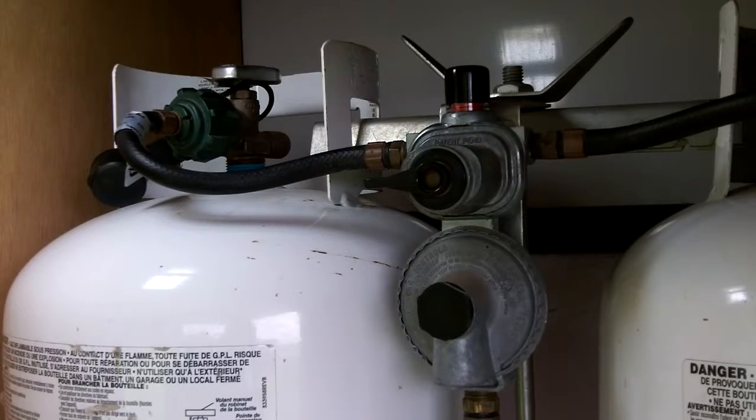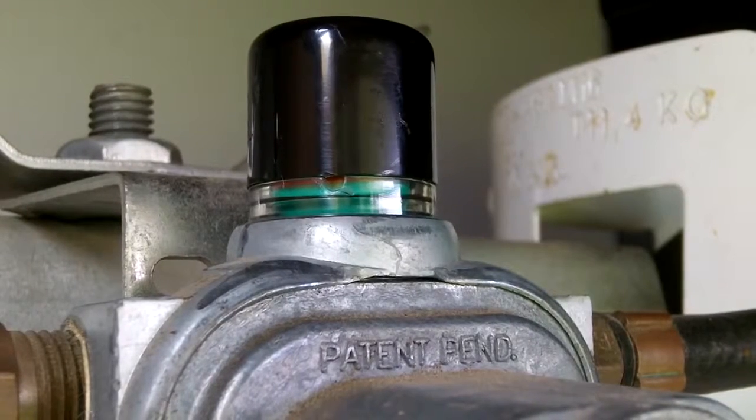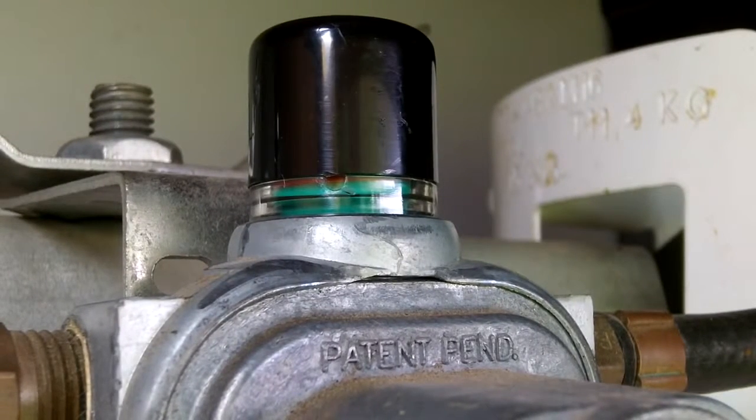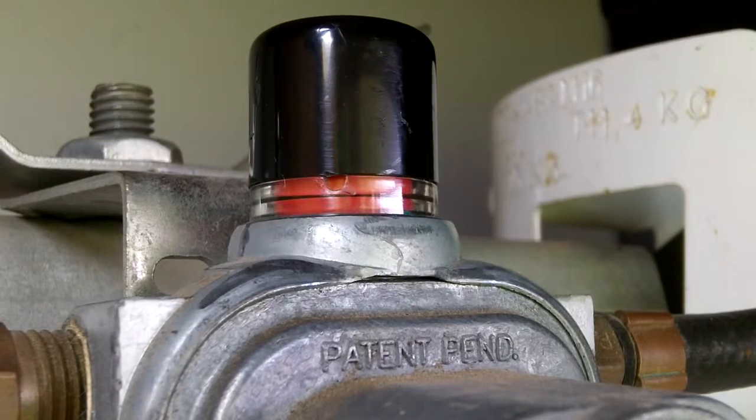More than likely your RV came with a propane auto changeover type regulator. This regulator is designed to automatically switch over from an empty LP tank to a full LP tank when the gas in the first tank has been depleted.